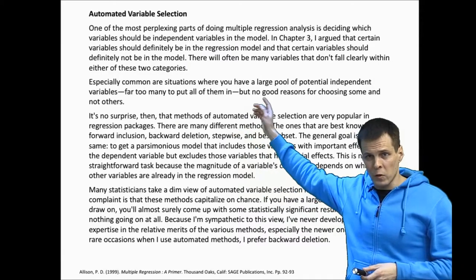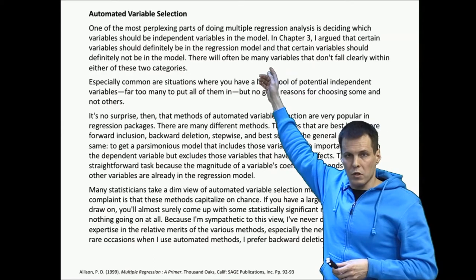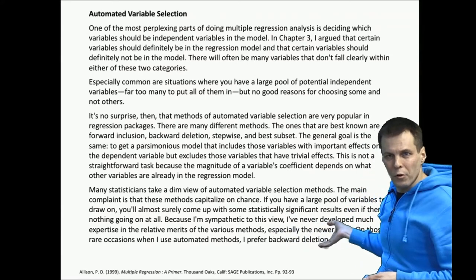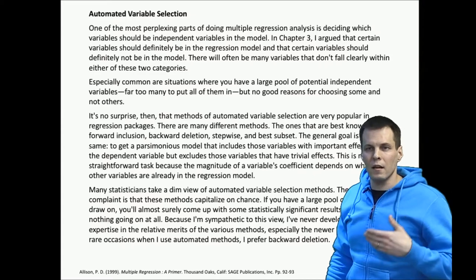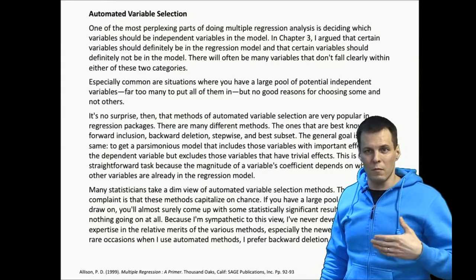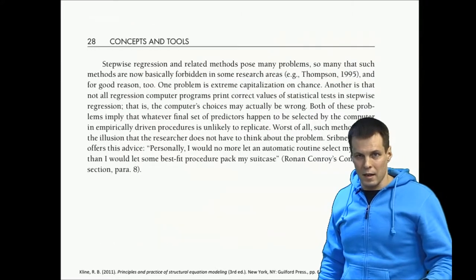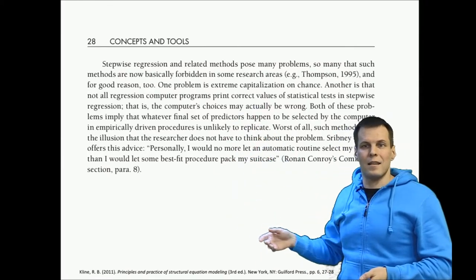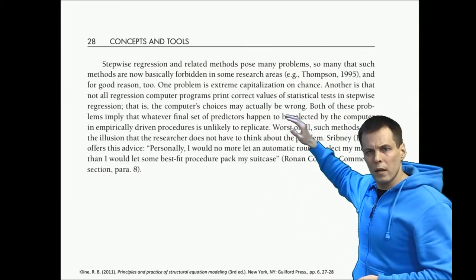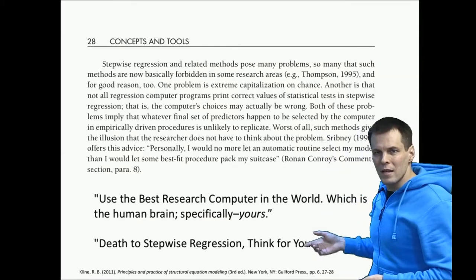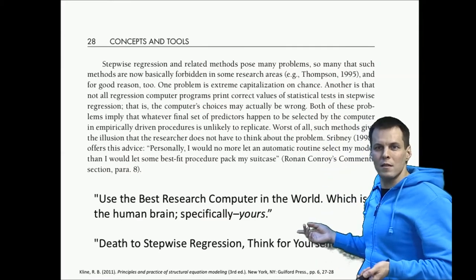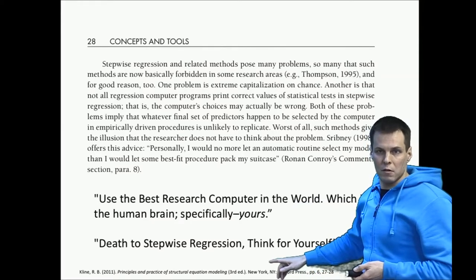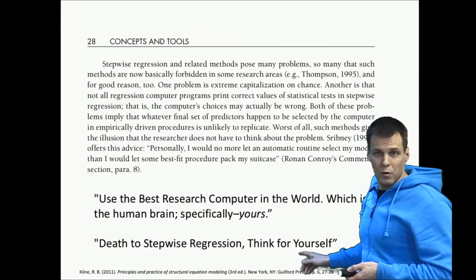Allison's book refers to this as automated variable selection. He takes a negative stance that this is not something that you want to do. He doesn't really explain why. Then Kline's book on structural equation modeling provides the most pointed comments on this technique. He says that stepwise regression is something that the computer does for you, and the computer is not very good at generating models. So instead of looking at what the computer does for you, you should be using the best research computer in the world: you should use your own brains to choose whatever will be in your model. And then he calls 'death to stepwise regression, think for yourself.' And I think that's a pretty good recommendation.